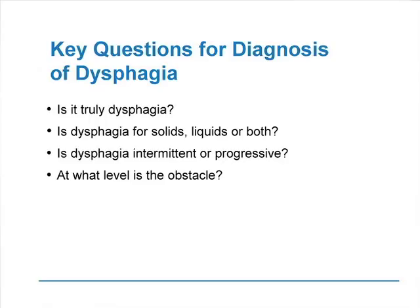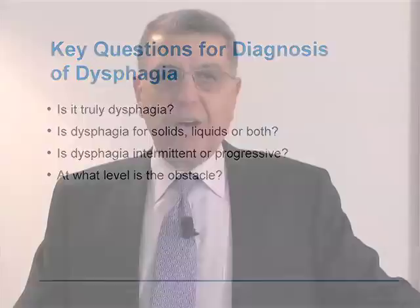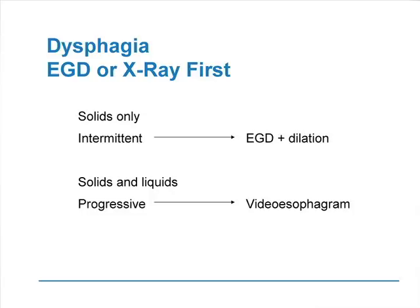The second question is: is dysphagia for solids only, liquids, or both? If it's solids only, it's mostly a mechanical cause. Is it intermittent or progressive? A stricture will cause sticking intermittently, whereas achalasia will cause dysphagia on a regular basis with increasing frequency. Finally, at what level is the obstacle? For oropharyngeal dysphagia, it is easy to recognize the trouble is in the throat — but beyond that, patients will tell you food sticks in their throat when it's actually stuck at the GE junction due to referred discomfort.